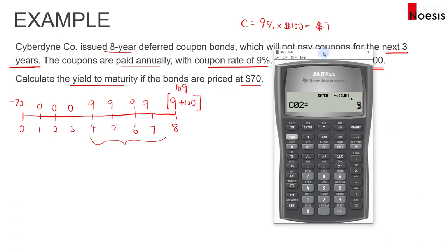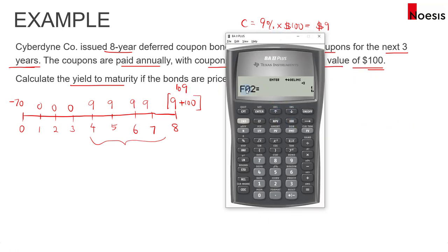So for C02, this will be 9. And your F02 will be 4, 4 times.